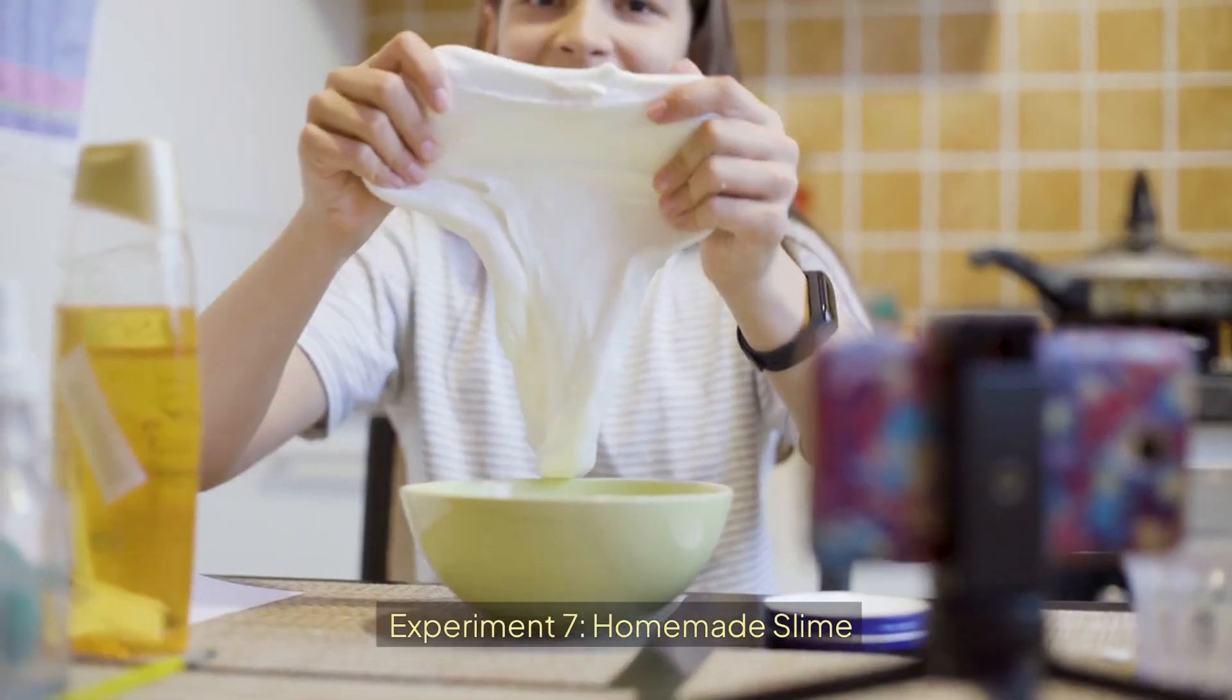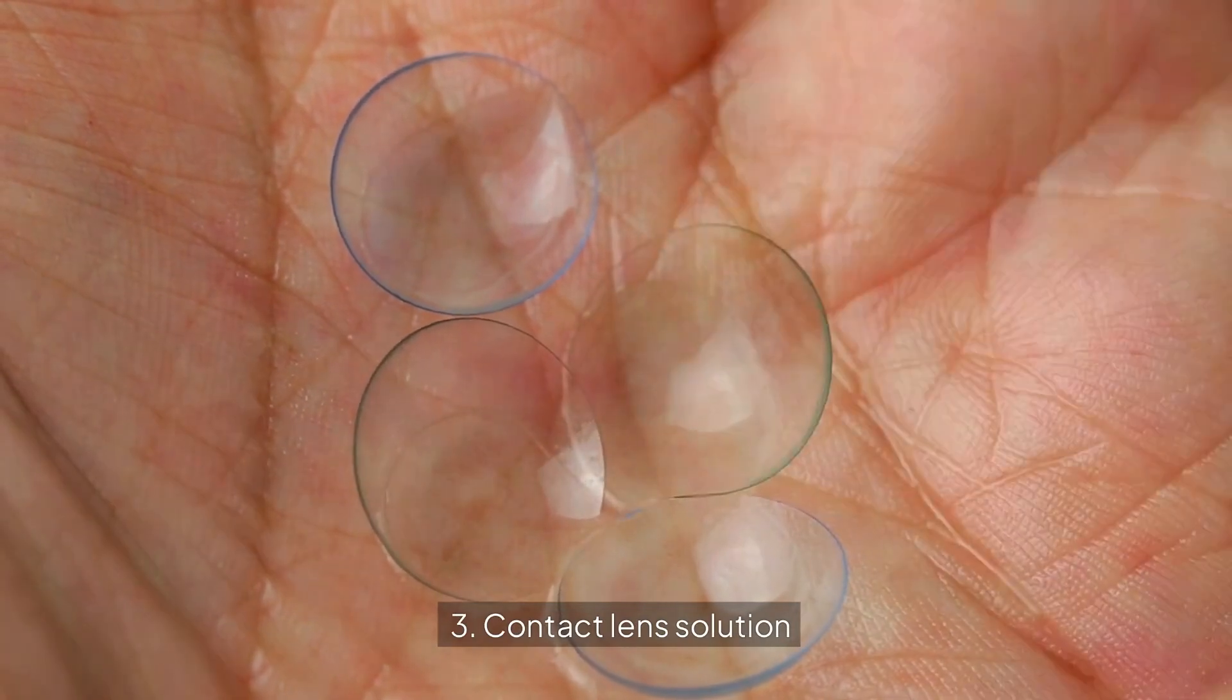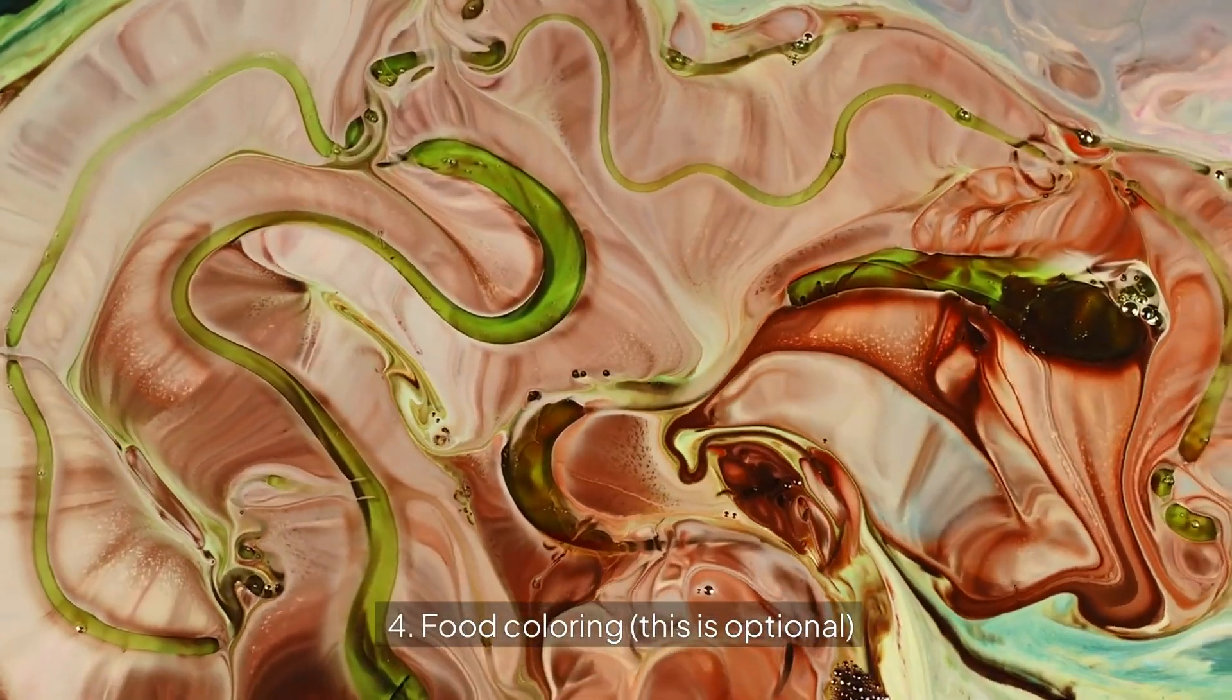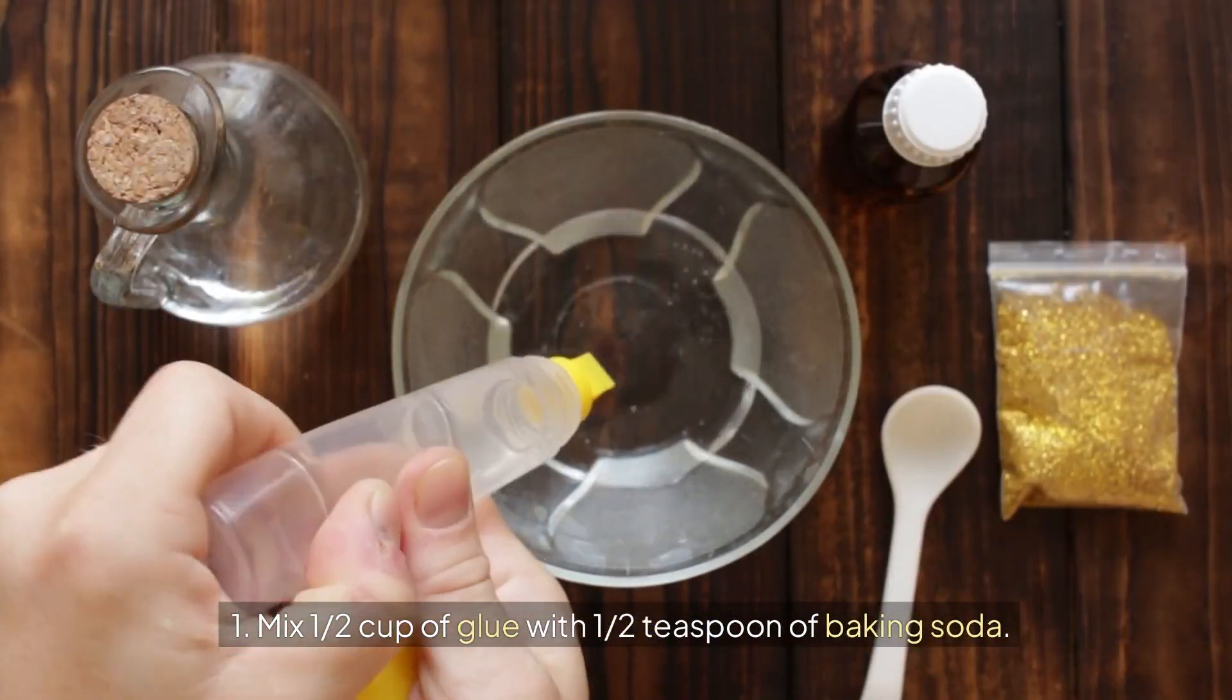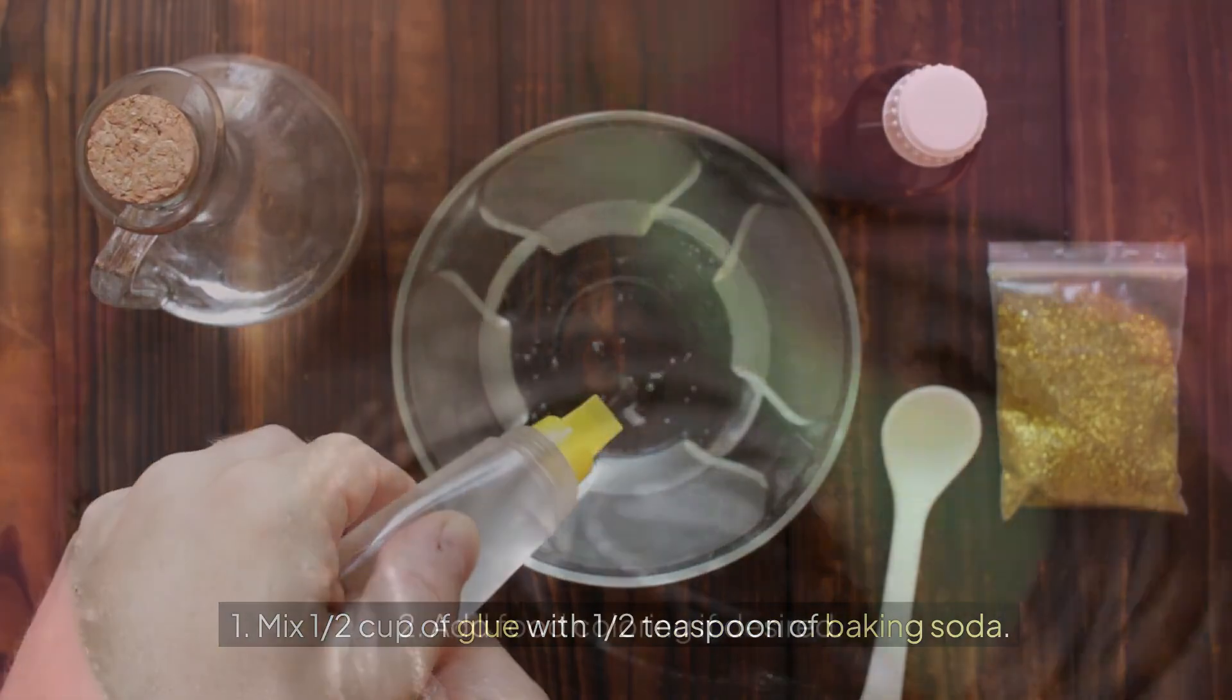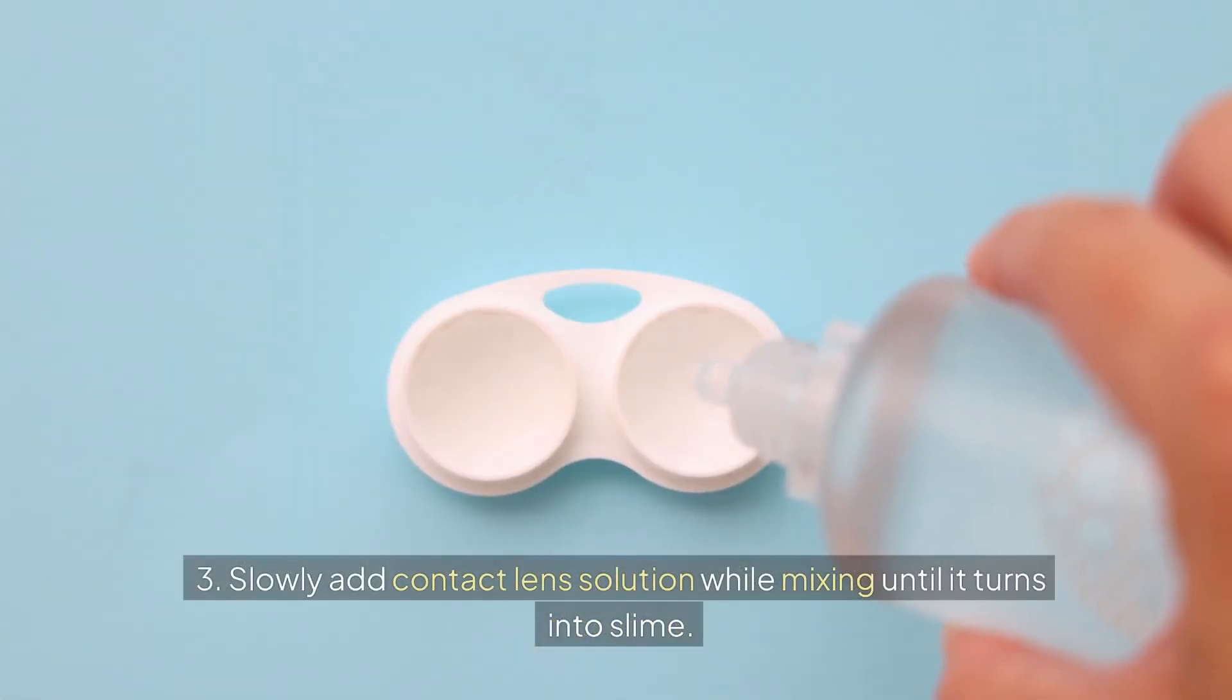Experiment 7: Homemade slime. Supplies: white glue, baking soda, contact lens solution, and food coloring (optional). Steps: Mix half a cup of glue with half a teaspoon of baking soda. Add food coloring if desired. Slowly add contact lens solution while mixing until it turns into slime.